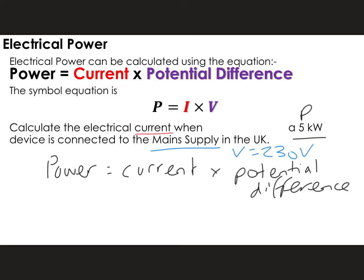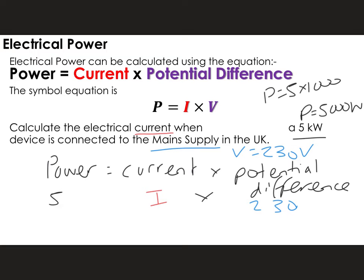Putting the numbers in: the current has the symbol I, multiplied by 230 for potential difference. Power equals 5 kilowatts — remembering that kilo means a thousand, so power equals 5 times 1,000, which is 5,000 watts. So we get 5,000 equals current times 230. Rearranging that, we get 5,000 over 230 equals current.